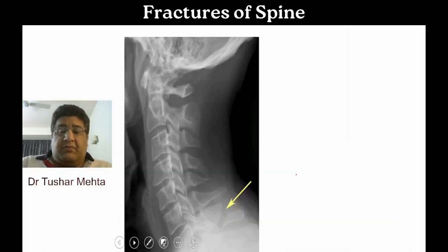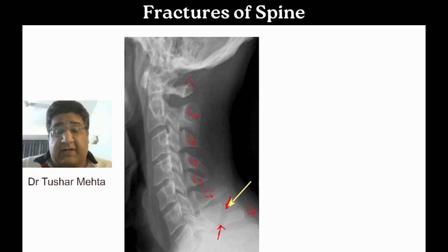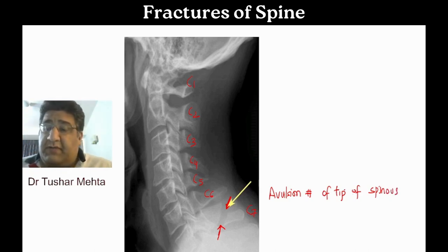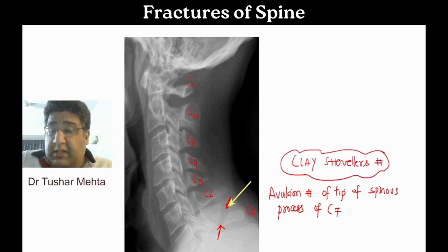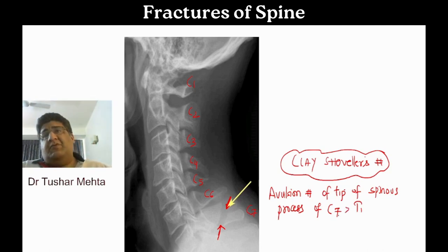Moving to the next image-based question. You can label C1 through C7. I said 'oops' at C7 because there is a clear-cut avulsion fracture of the tip of the spinous process of C7, which has a very prominent spinous process — the vertebra prominens. This fracture is called clay shoveler's fracture. It can also involve T1, so in a single-answer MCQ, prefer C7 as the classical description was first given for C7.